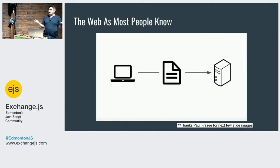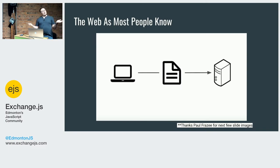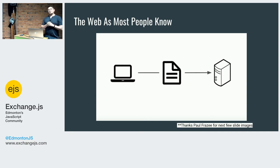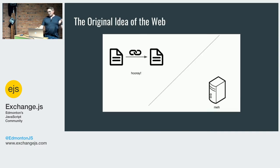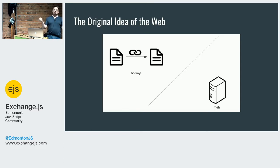What is the web? Most people think of it like this: you get a device, type in an address, and get a web page, document, or app. That's how it works in their world — very simple. But the original idea of the web started with two documents you could link between, which was revolutionary at the time.